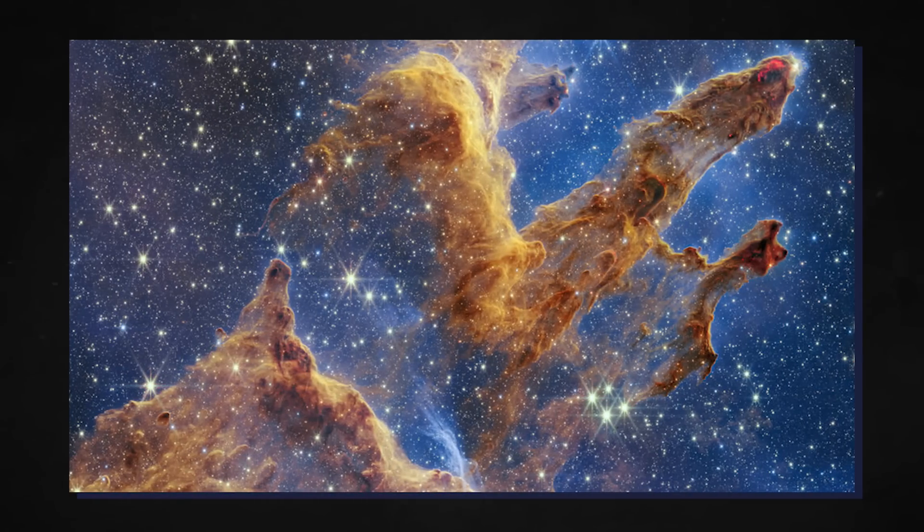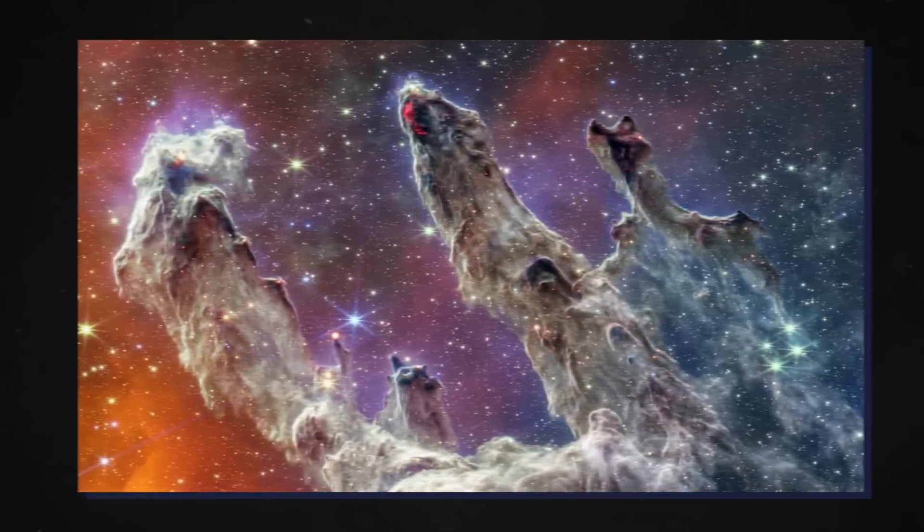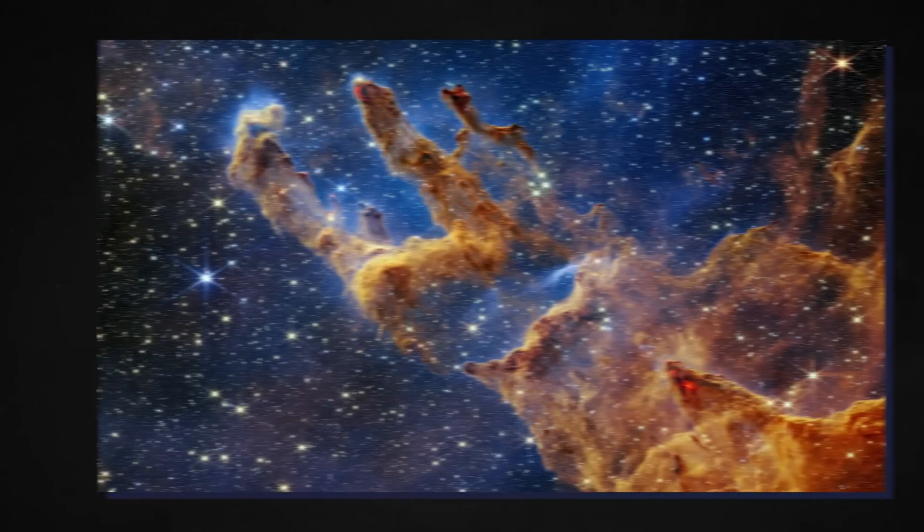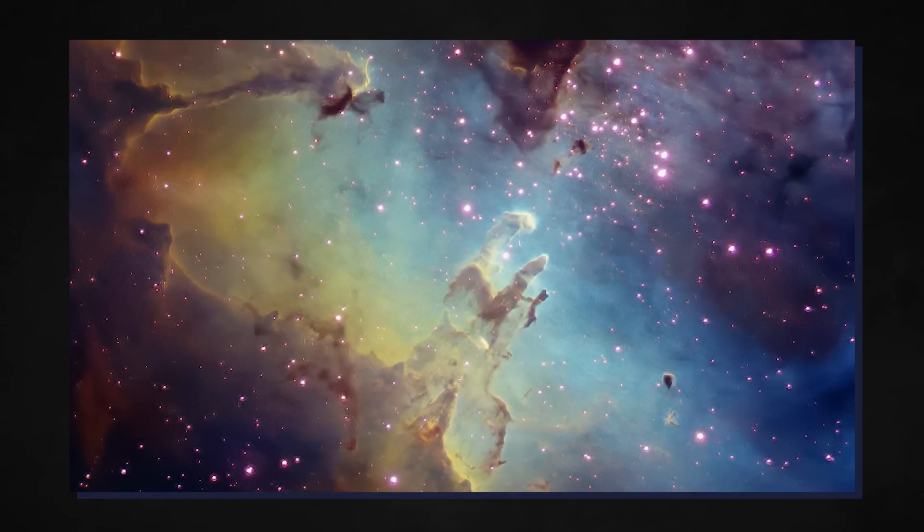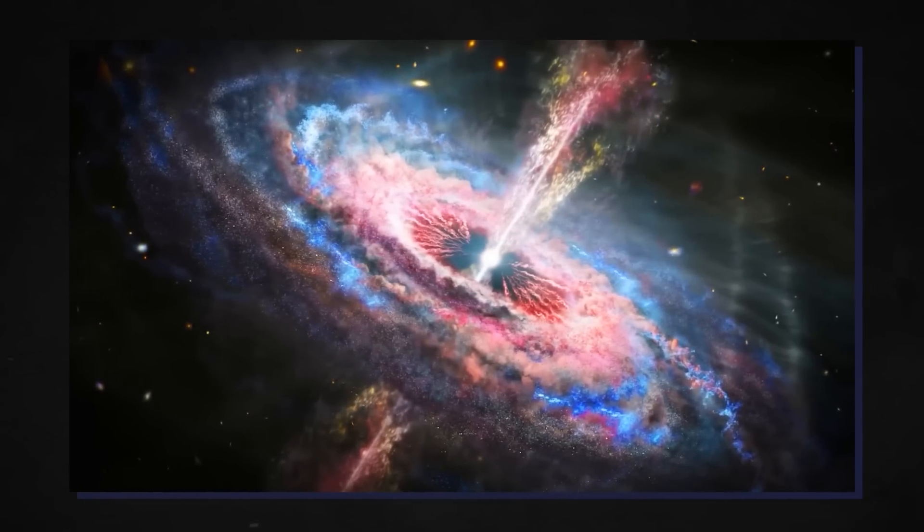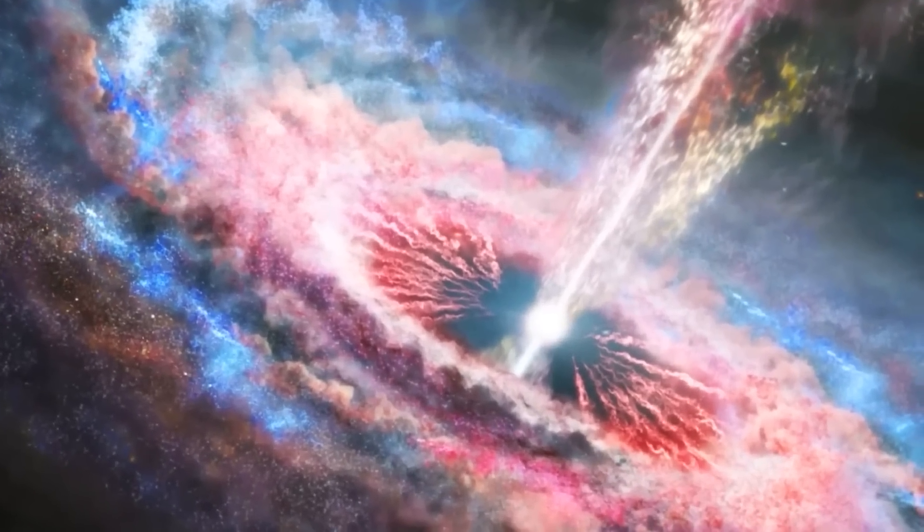Whereas Hubble mostly observed opaque dust and frigid gas, JWST discovered several stars that had already broken free of their natal cocoons. The majority of these brand-new stars may be seen outside the shadowy pillars and are identifiable by their diffraction spikes in images captured by reflecting telescopes like JWST. These young suns have had enough time to start nuclear fusion in their core and develop into mature stars.